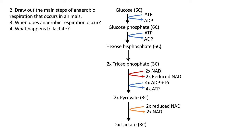Importantly, that NAD can feed back to be used for the oxidation of triose phosphate, so again it keeps that cycle going and allows ATP to be continually produced.